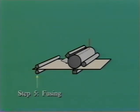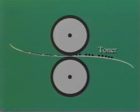Step 5, fusing. The paper with its loose, unbonded toner image is now passed through rollers which use heat and pressure to fuse the toner into the paper to make a permanent image.